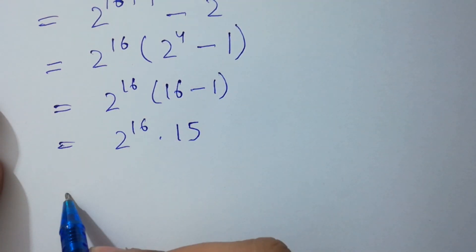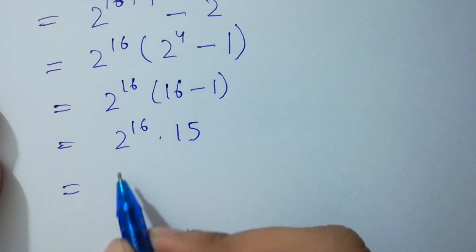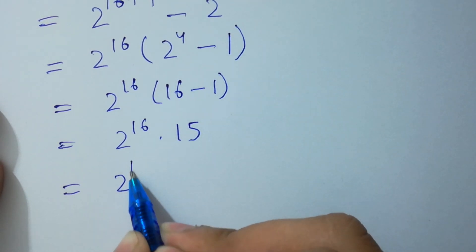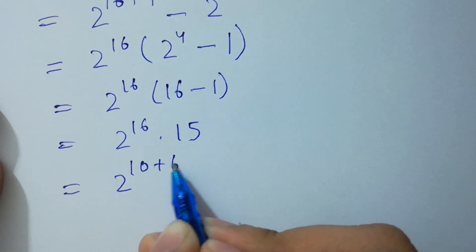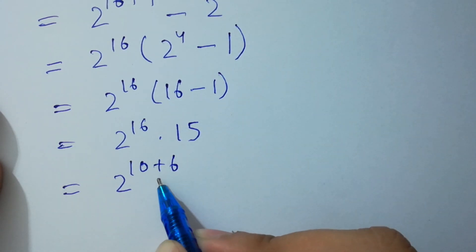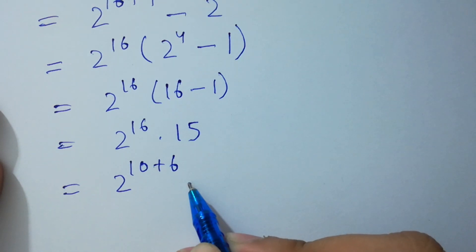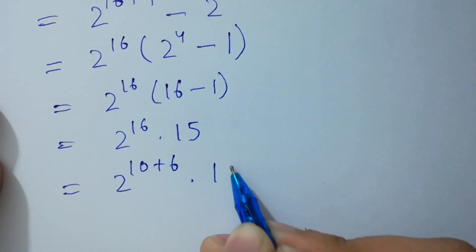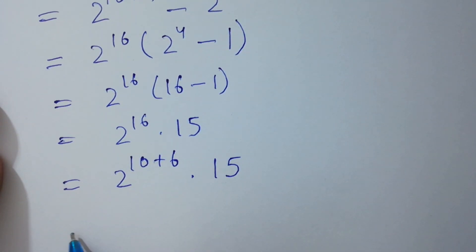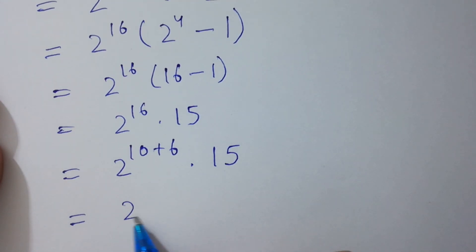Next step here: 2 to the power 16 is the same as 2 to the power 10 plus 6, because 10 plus 6 equals 16, times 15. 15 can be written as 10 plus 5.